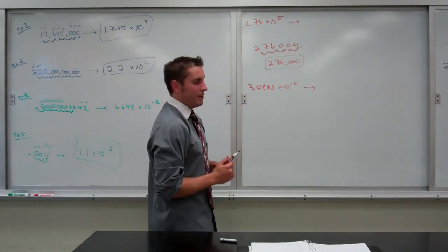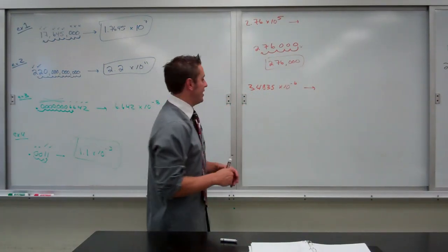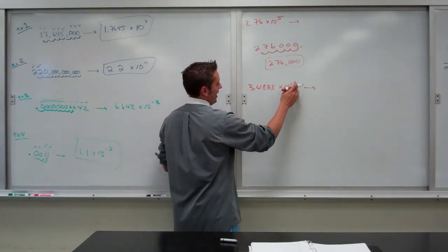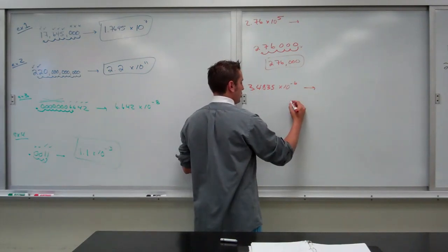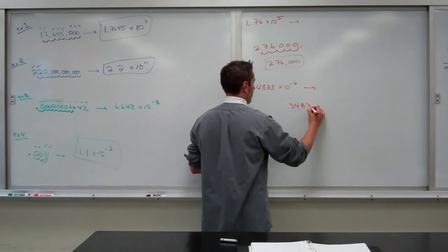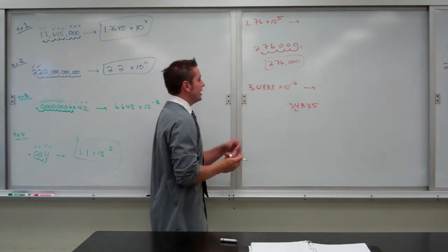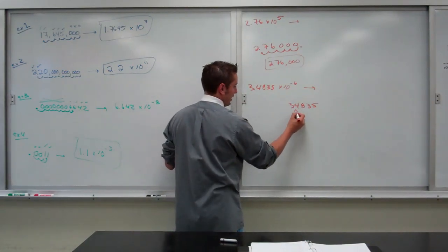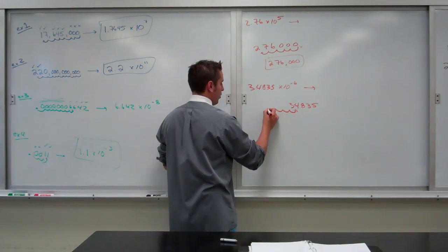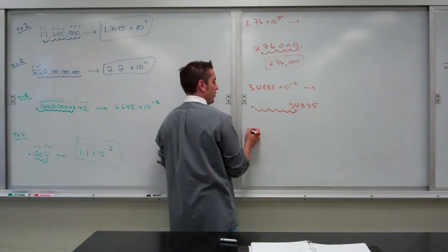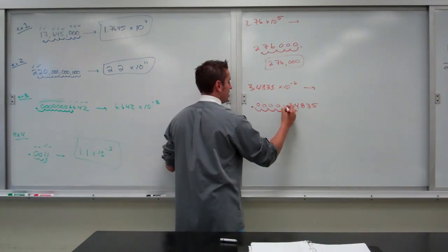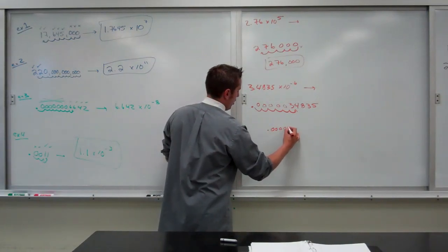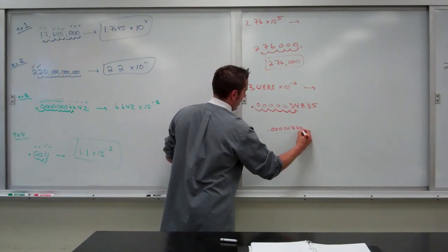Bottom one, 3.4835 times 10 to the negative sixth. First, you look at sig figs. 1, 2, 3, 4, 5 sig figs. Then, it's a negative exponent, which means it's going to be a decimal. So, we do the 3, 4, 8, 3, 5. Here's where the decimal is. Negative exponent means I'm moving to the left, and the sixth tells me it's six places. 1, 2, 3, 4, 5, 6. It means I put my decimal there, and zeros fill in all of those places. So, it ends up being 0.000003435.